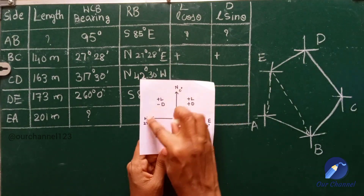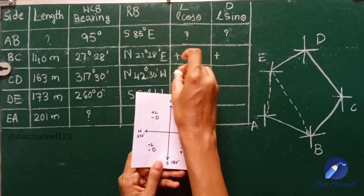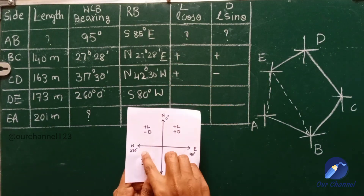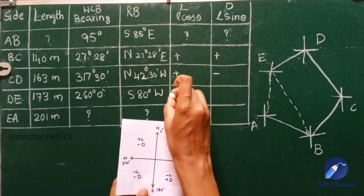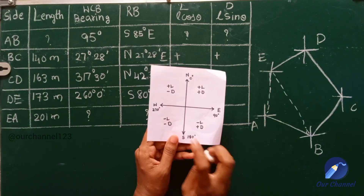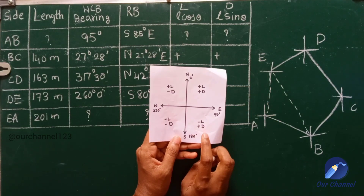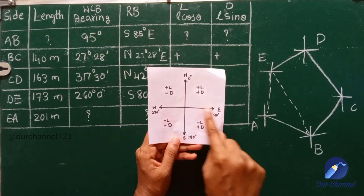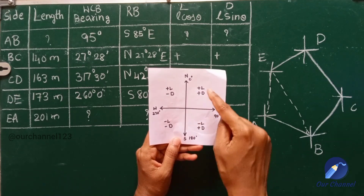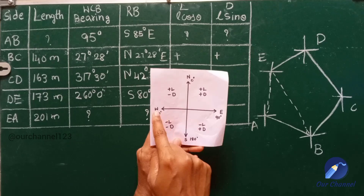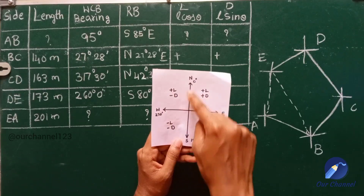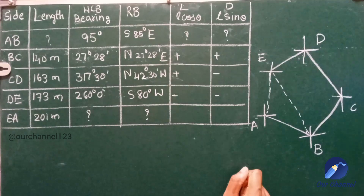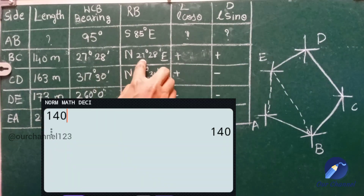In North West, latitude is positive and departure is negative. In South West, both latitude and departure are negative. To summarize: on the east side departure is positive, on the west side it is negative; on the north side latitude is positive, on the south side it is negative. Now computing: 140 × cos(27° 28') = 124.21.